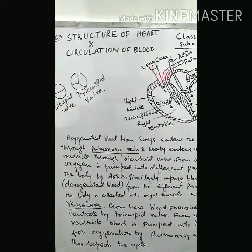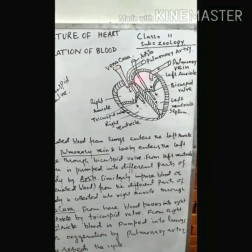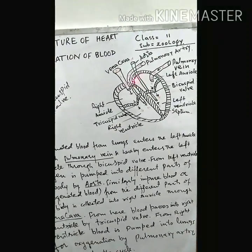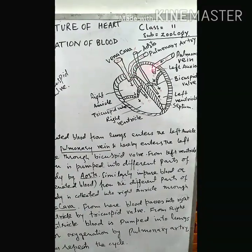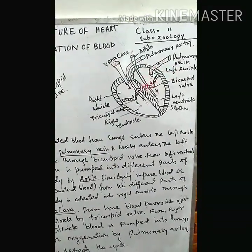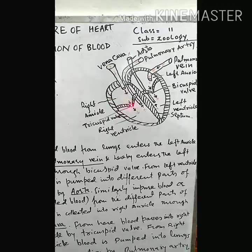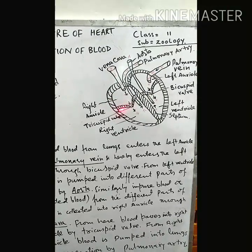So far as the heart is concerned, it has four parts — four chambers: left auricle, left ventricle, right auricle, and right ventricle.